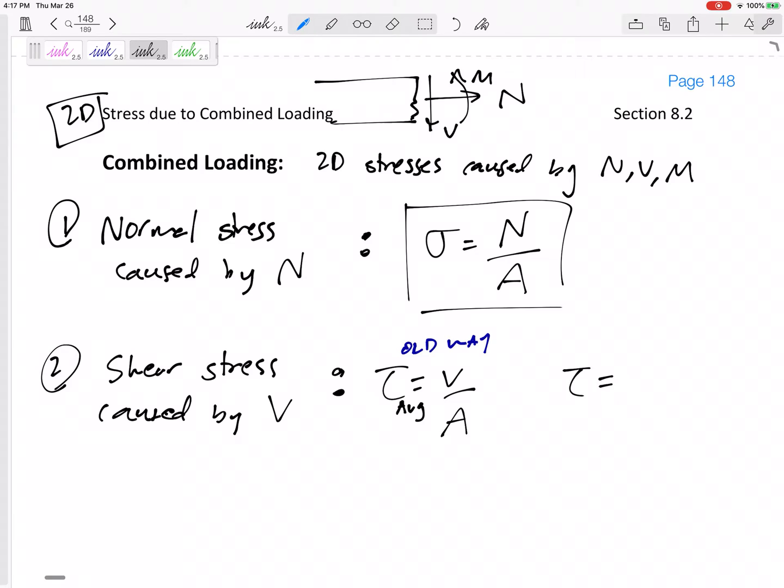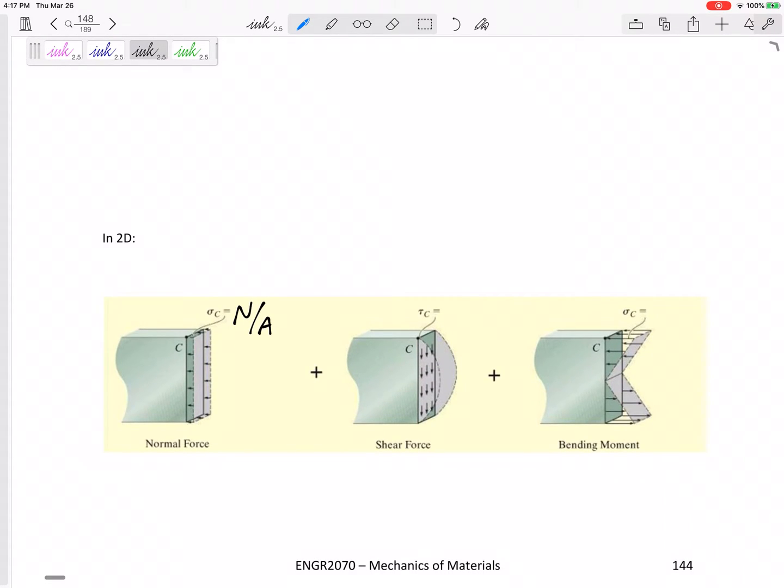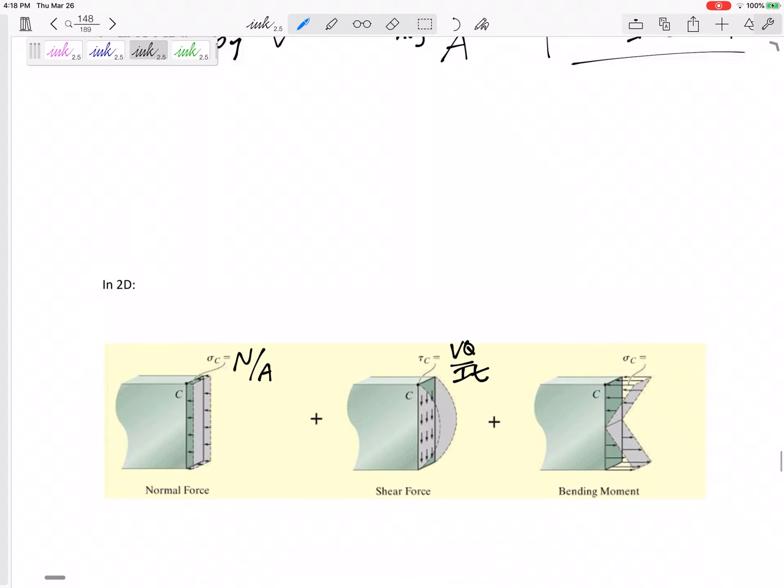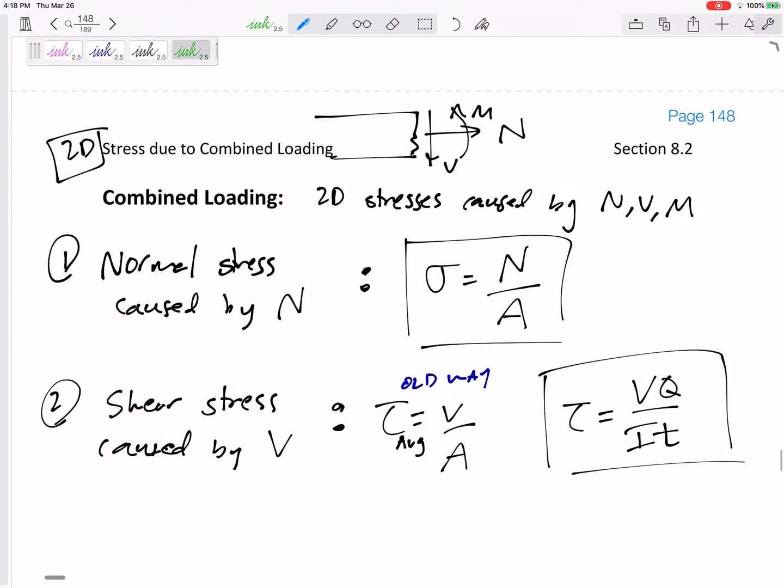But our new way and our more accurate way is VQ over IT. VQ over IT. So now the shear stress caused by the shear force is VQ over IT. So the N creates that stress, the V creates that stress.